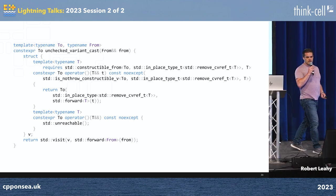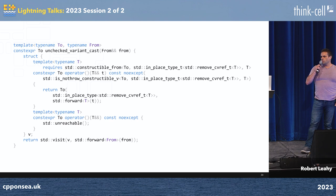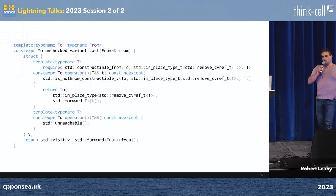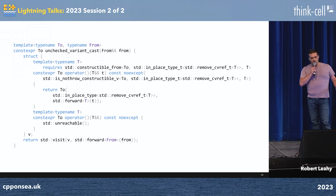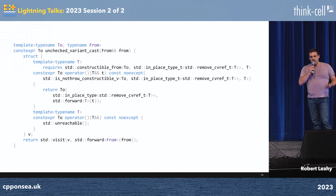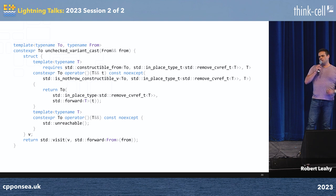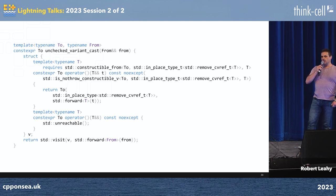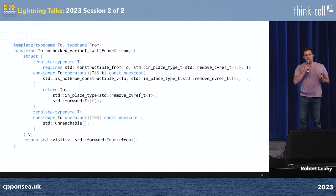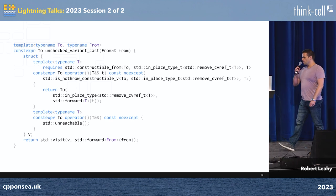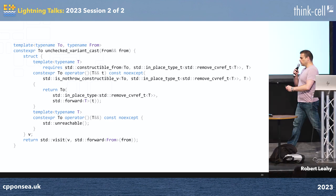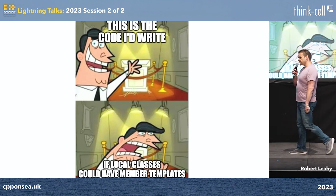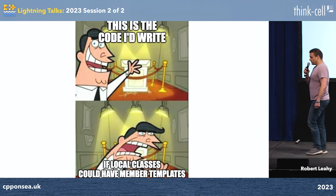We're going to take our generic lambda and cleave it in two. We're going to use some fancy C++20 constraints to make sure that mapping function only gets selected when we can actually perform the mapping. Otherwise, we invoke a function that does every C++ developer's favorite thing: it just introduces undefined behavior into the program. But there's a problem — this code lives in my perfect version of C++, one where local classes can have member templates, which unfortunately they can't.